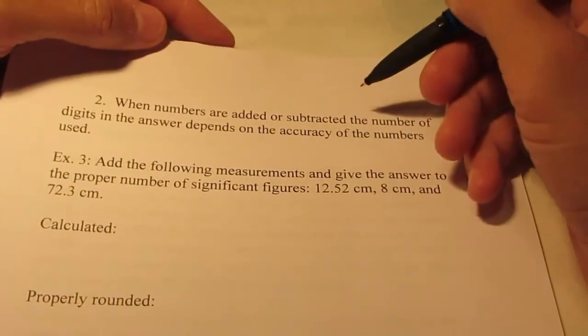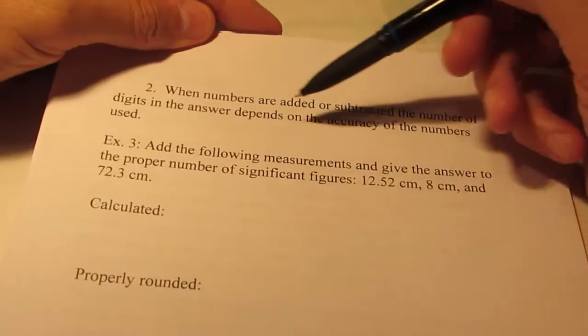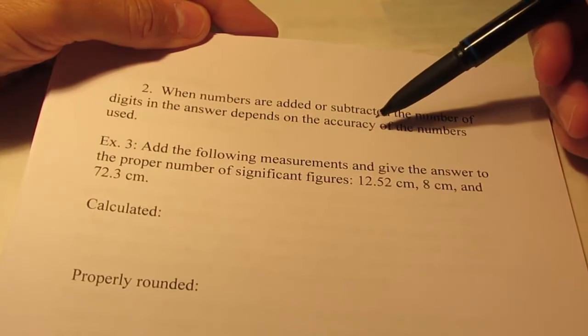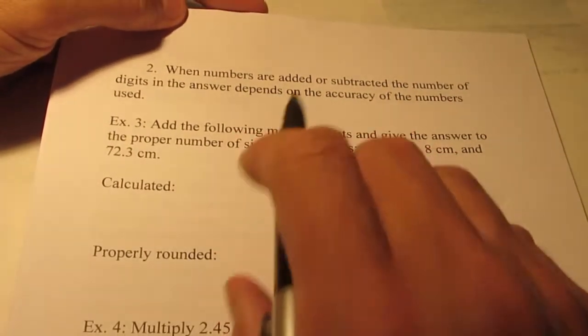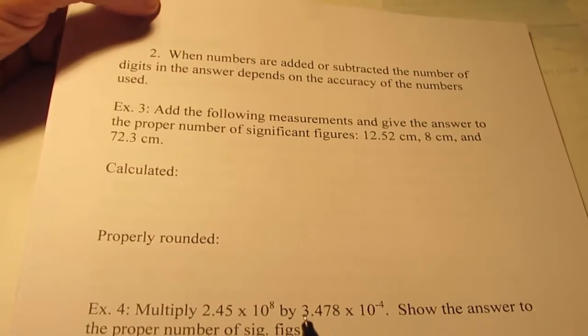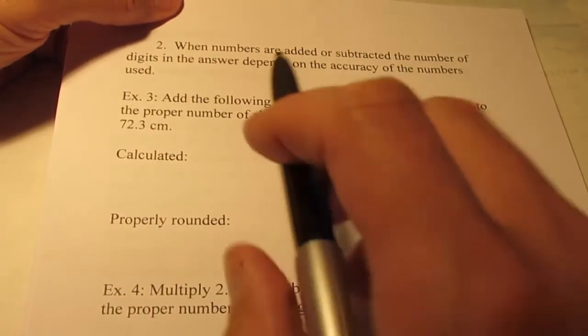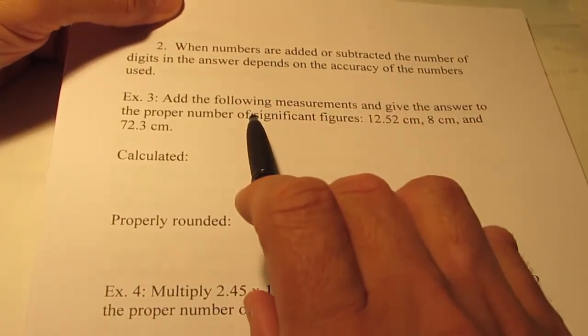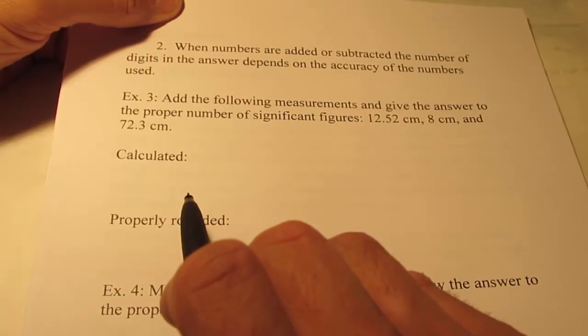Okay. Now, when we add or subtract, the number of digits in the answer depends upon the accuracy of the numbers used. I know that isn't very informative, but as I work through this, hopefully it'll make some sense.